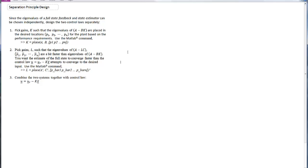Place the gains L such that the eigenvalues of A minus LC, call them P1 bar through Pn bar, are a bit faster than the eigenvalues of A minus BK. You want the estimate of the full state to converge faster than the control law U equals U sub R minus Kx hat attempts to converge to the desired input.